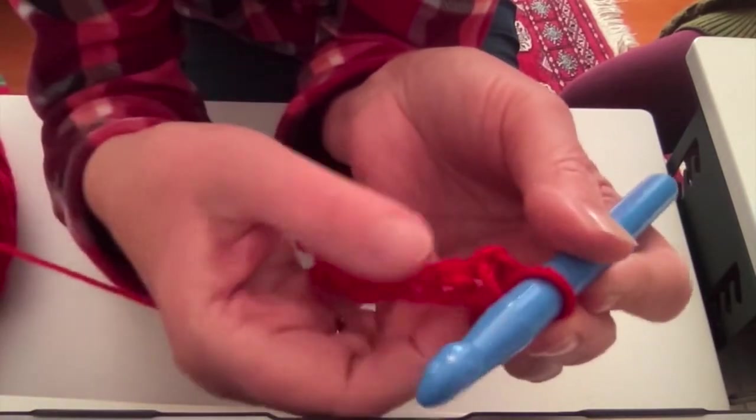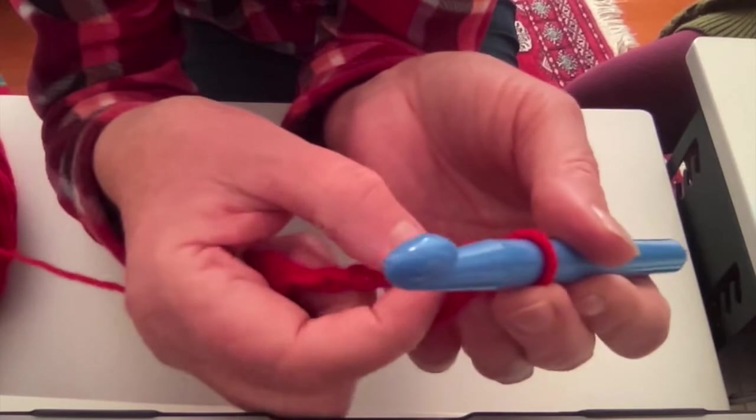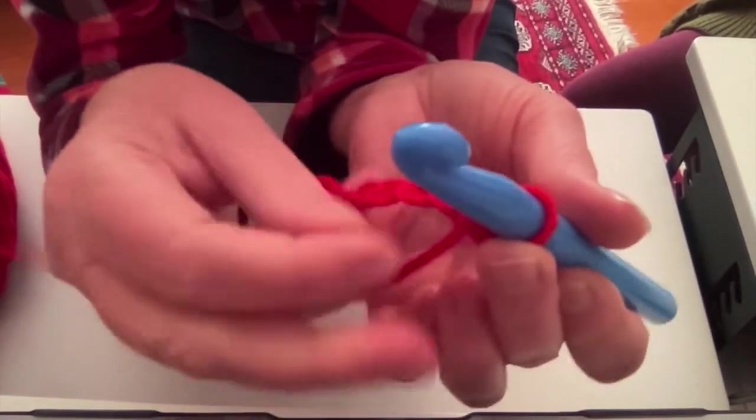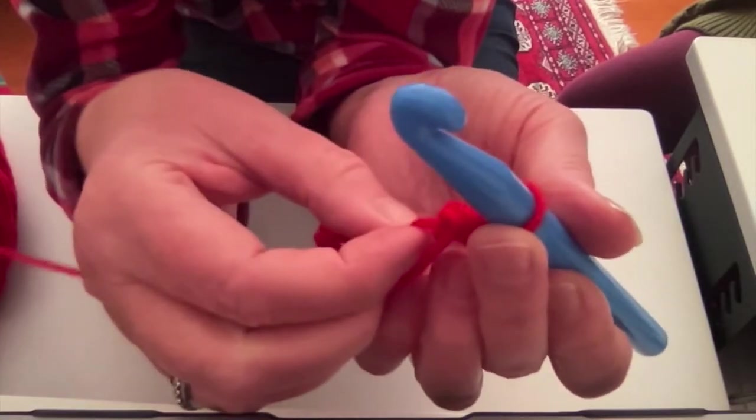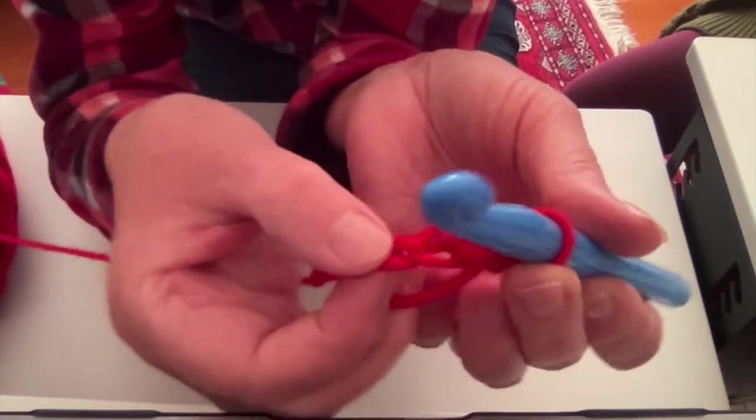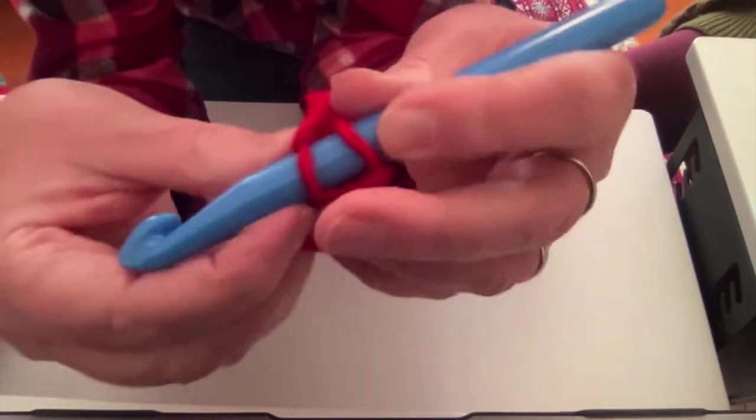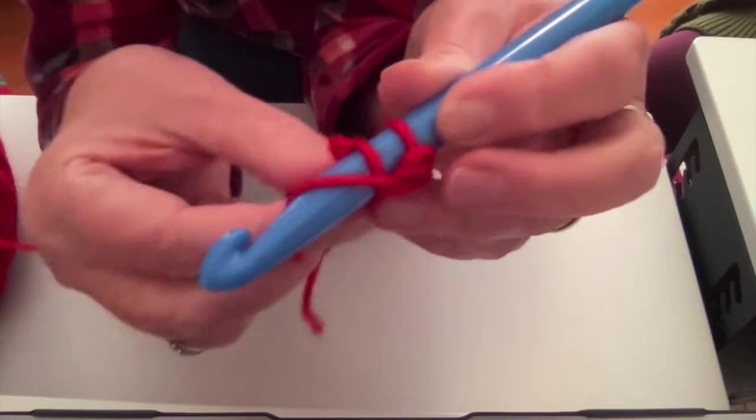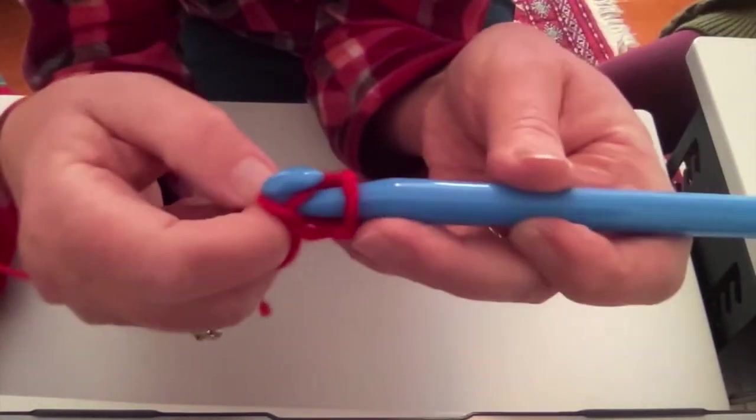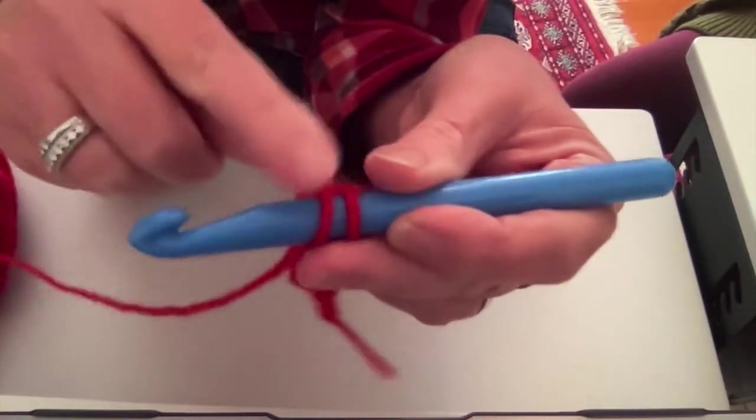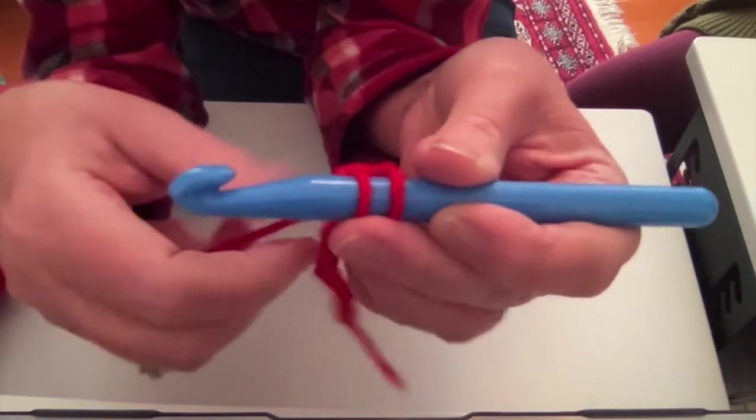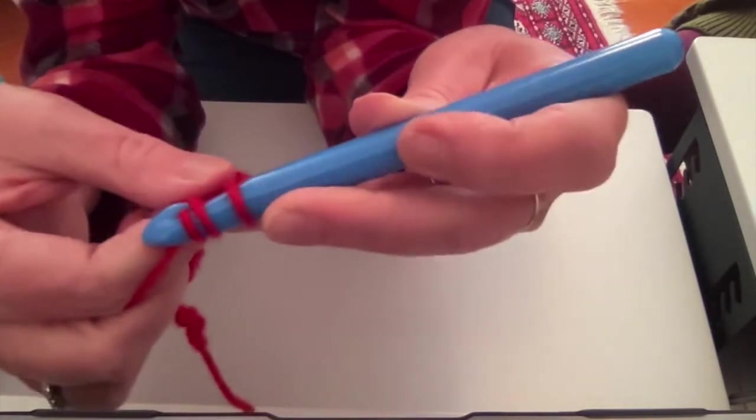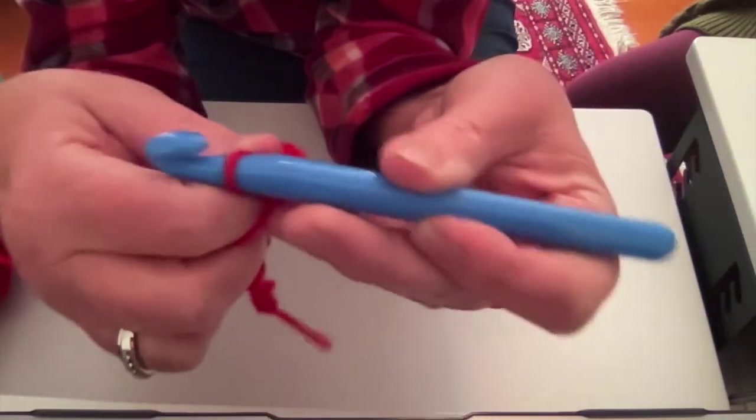Now to find out where to put your hook next is you find the next open hole. Not the one you worked in, but the next one. So that's this one. Go down, around once, pull through. Now you have two on here. Around and pull out from both, so that now you have one.